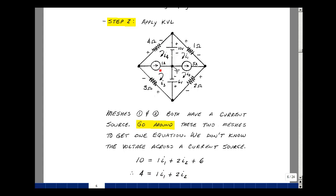Same is true of this mesh over here. If I go around this mesh, I've got this current source, and again, I don't know the voltage across the current source, so it becomes another unknown. Let's go around the outer mesh. Take a look at that on the next page.